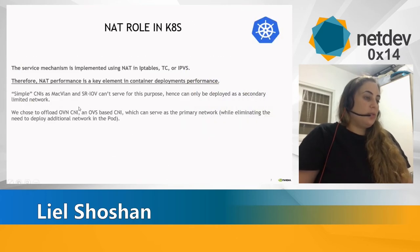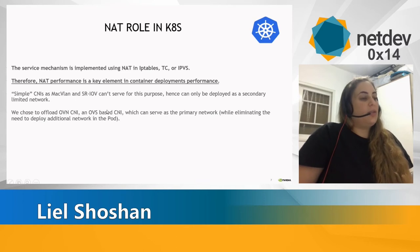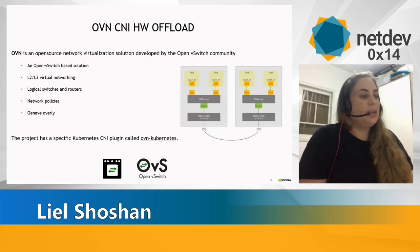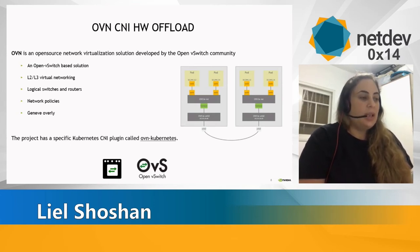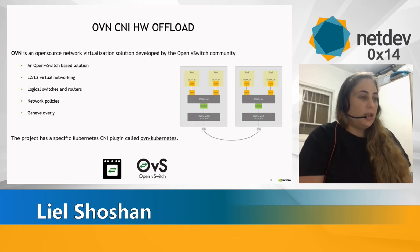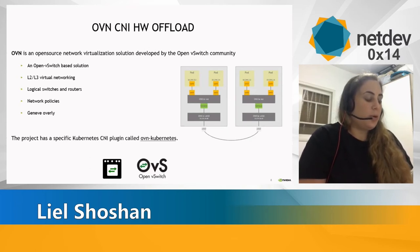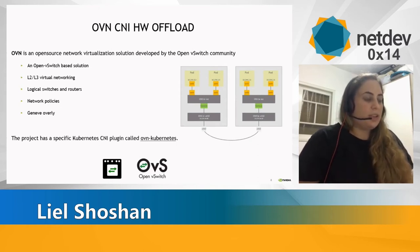When thinking about offloading and acceleration, we wanted to choose a CNI which implements a full SDN that we can offload without the need to add a secondary network, and just use one network interface inside the container managed by Kubernetes. We chose OVN CNI, which is an OVN-based CNI. OVN is an open source network virtualization solution developed by the Open Source Community. It has a specific Kubernetes CNI plugin called OVN-Kubernetes. It's an OVS-based solution with L2 and L3 virtual networking composed of logical switches and routers. Users can configure network policies, and between the worker nodes there is a Geneve overlay tunneling.